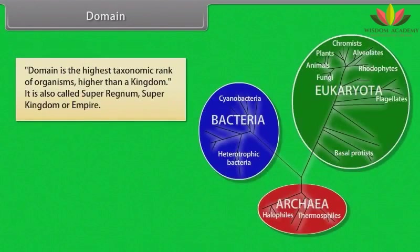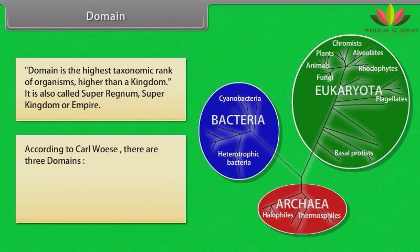Domain: Domain is the highest taxonomic rank of organisms, higher than a kingdom. It is also called super regnum, super kingdom, or empire. According to Carl Woese, there are three domains: Archaea, Bacteria, and Eukaryota.